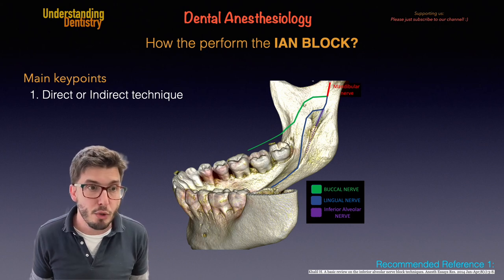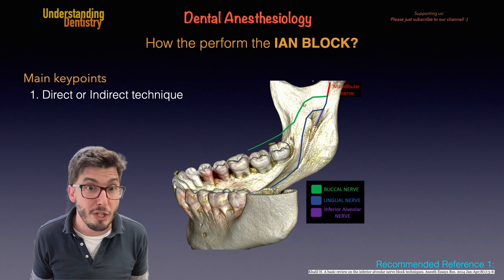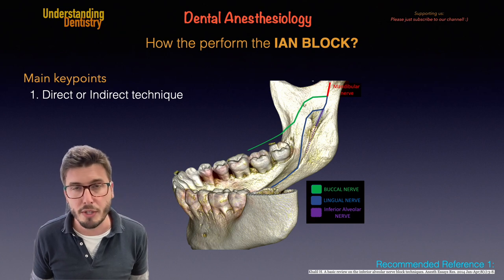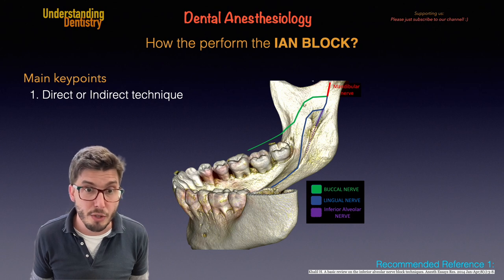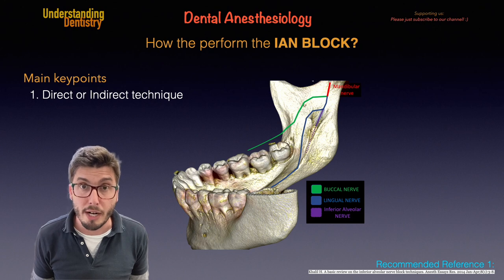The first key point is to choose between the direct or indirect technique, but you need to take into consideration which nerves you are actually targeting. Usually if you are going to do a procedure of restorative dentistry or endo, you will be targeting the inferior alveolar nerve. If you need to do a surgery or an extraction, you also need the soft tissues — buccal and lingual soft tissues of the mandible — and those are the buccal and lingual nerve respectively.